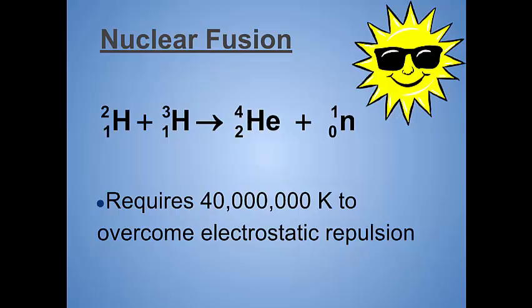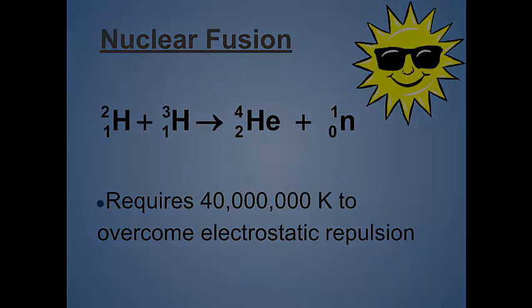Now in order to do this, to cram two nuclei together that don't want to be anywhere near each other, you need an extremely high temperature, about 40 million Kelvin, which happens to be approximately the temperature of our sun. And so this is one of the things that's happening up there, and one of the ways that you can make heavier atoms from lighter ones.